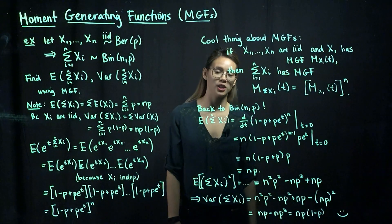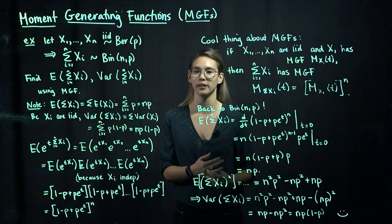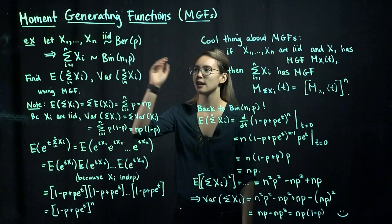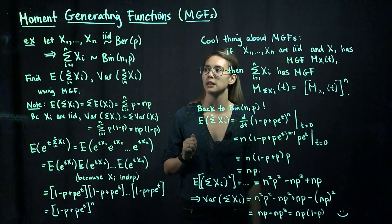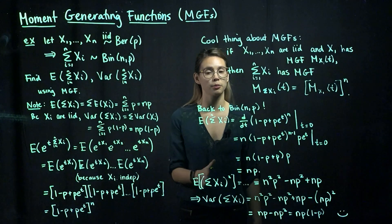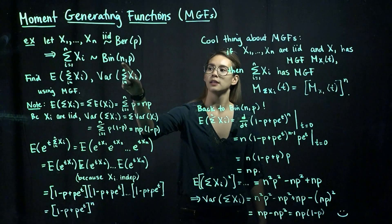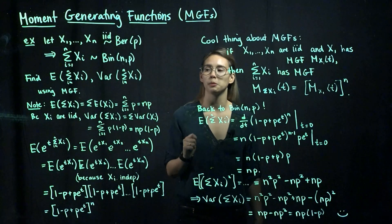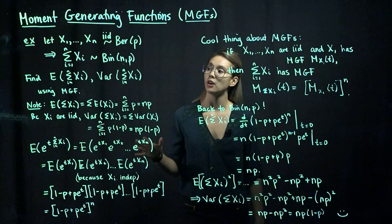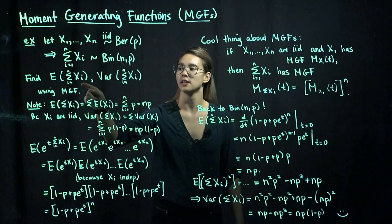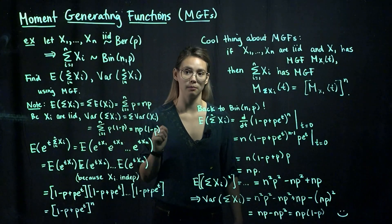In the last video, we saw MGFs in action for the Bernoulli distribution, and now we're going to look at a sum of Bernoulli random variables. Let's have x1 through xn be a random sample from a Bernoulli distribution with probability p. If we have a bunch of Bernoulli random variables and we take the sum, we have a binomial random variable with size n and probability p. What we want to do is use MGFs to find the expected value and the variance of this sum of n Bernoulli random variables.